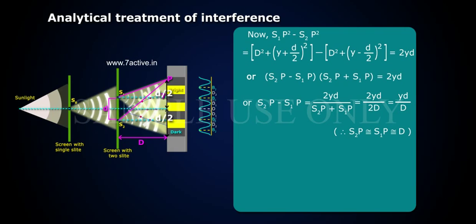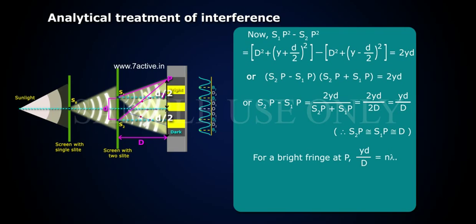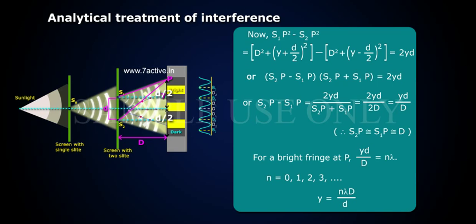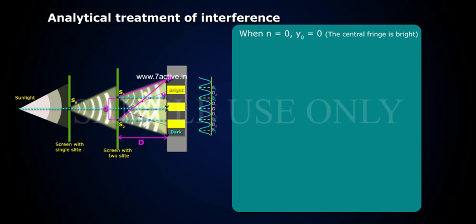Since S2P minus S1P equals YD by D, for a bright fringe at P: YD by D equals N lambda, where N equals 0, 1, 2, 3, and so on. Therefore, Y equals N lambda D by d. When N equals 0, Y0 equals 0 — the central fringe is bright.